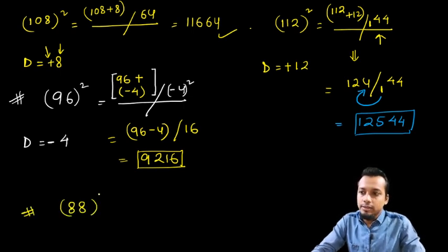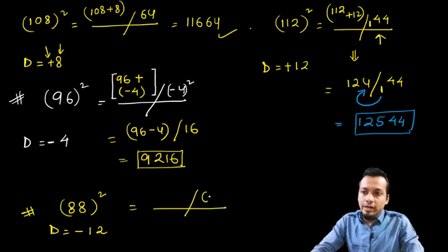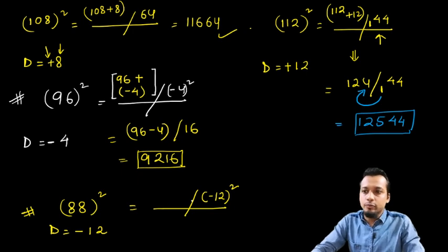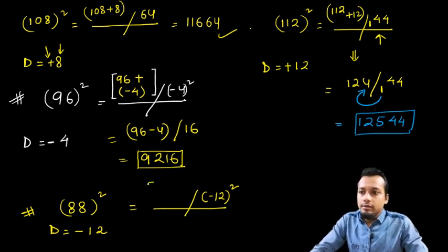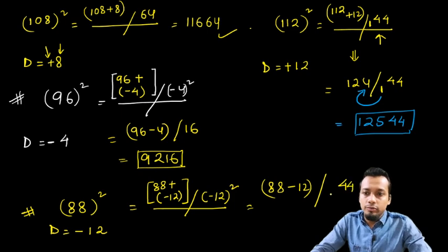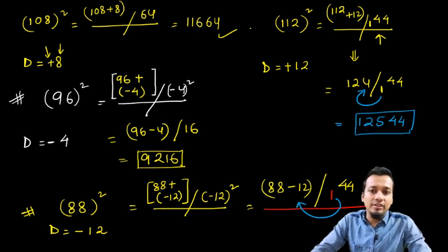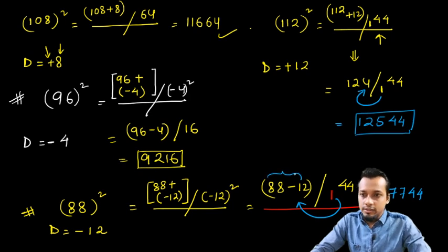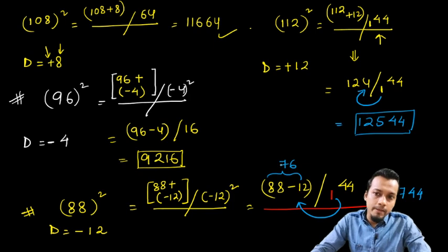Let's solve 88 squared. The deviation is minus 12. On the right side: minus 12 squared is 144 — write 44 and carry the 1. On the left side: 88 minus 12 is 76. After carrying the 1, 76 becomes 77. So the answer is 7744.